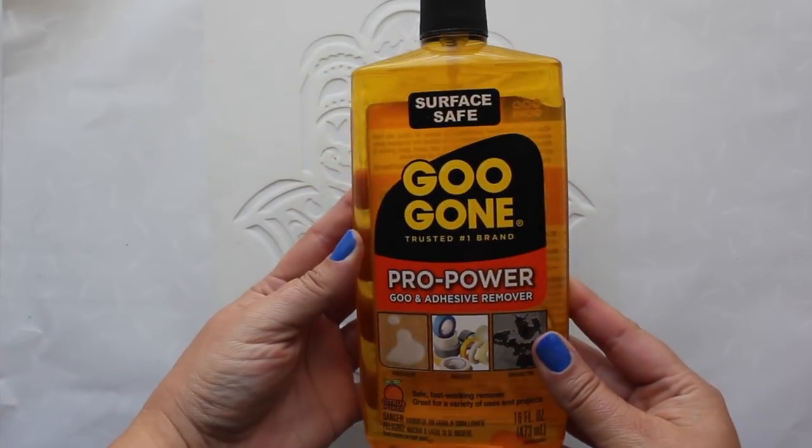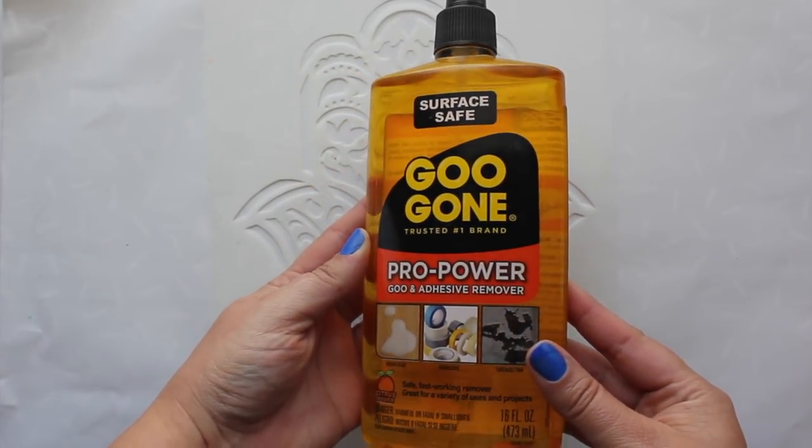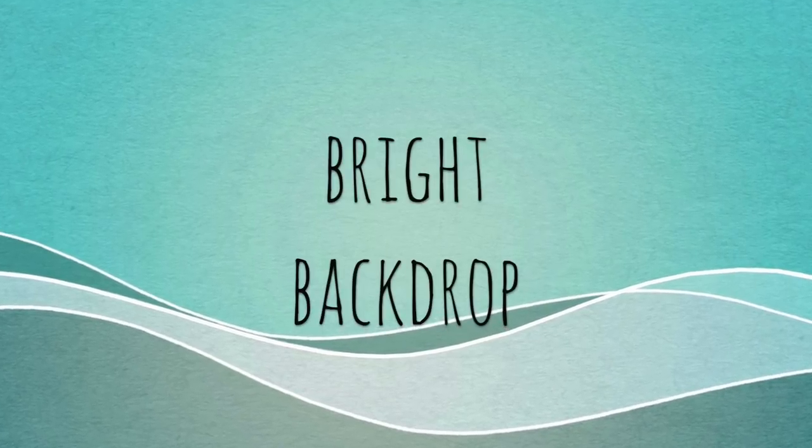To remove the adhesive residue from your stencil, I recommend spraying it with a Goo Gone spray, then rinsing clean with warm soapy water.